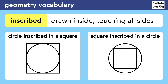The SAT often describes one shape as inscribed within another, which means that it's completely enclosed by the other shape, with the edges just barely touching each other. Pay close attention to the order of the words in the question. The circle inscribed in a square on the left looks very different from the square inscribed in a circle on the right.